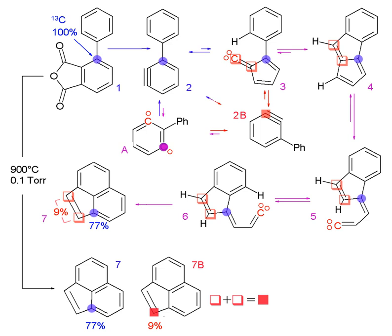1,2-13C F6P becomes 2-glyceraldehyde-3-phosphate (G3P), 1,2,3-13C T3P, 1,2,3-13C T3P, and 1 unlabeled T3P. The 2,3-13C T3P can then be reacted with S7P to form an unlabeled erythrose 4-phosphate (E4P) and a 5,6-13C F6P. The unlabeled T3P will react with S7P to synthesize unlabeled products.